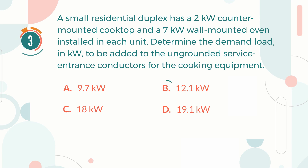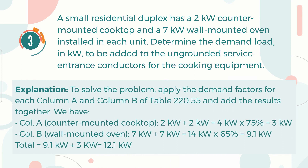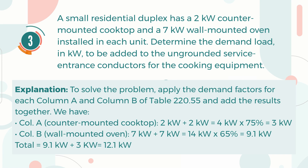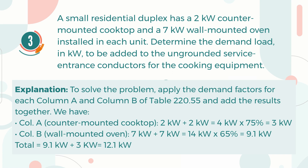The correct answer is B, 12.1 kW. Explanation: To solve the problem, apply the demand factors for each column A and column B of Table 220.55 and add the results together. According to column A, counter-mounted cooktop: 2 kW + 2 kW = 4 kW, then multiplied by 75% equals 3 kW. According to column B, wall-mounted oven: 7 kW + 7 kW = 14 kW, then multiplied by 65% equals 9.1 kW. Hence, we have 12.1 kW in total.